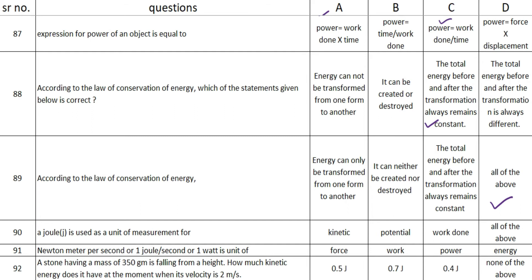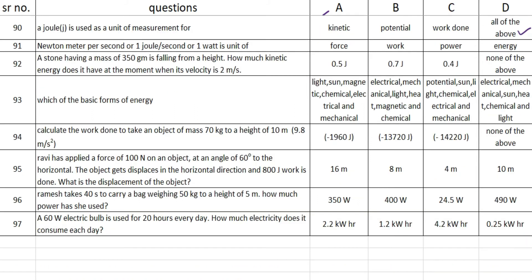The next one: a Joule is used as a unit of measurement for kinetic energy, potential energy, and work done — and the correct option is D, all of the above. The next question: one newton-meter per second, or one joule per second, or one watt is the unit of — and the answer is option C — power.